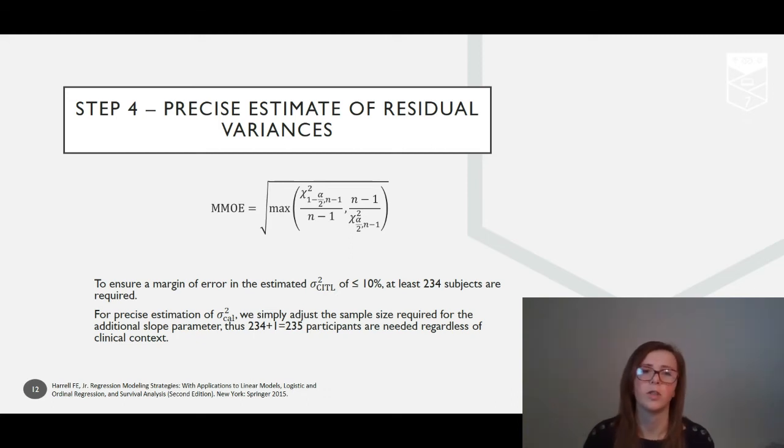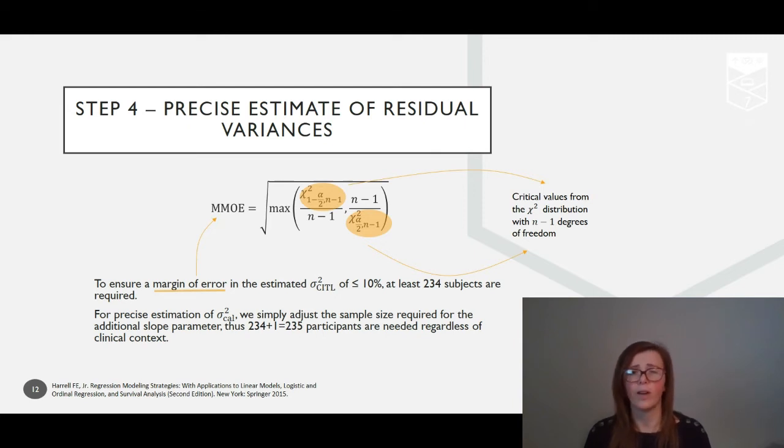Our final criterion is to ensure precise estimates of the residual variances for our calibration statistics. This is essential because although these residual variances are not direct measures of predicted performance themselves, their estimated values are used towards the parameter estimates and, crucially, their standard errors. For sigma-squared calibration in the large, we consider a linear regression model with only an intercept term and ensure that the bounds of the 95% confidence interval for the residual variance has a small multiplicative margin of error around the true value.